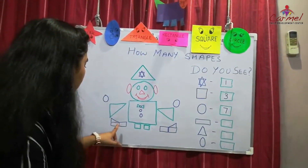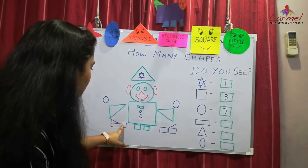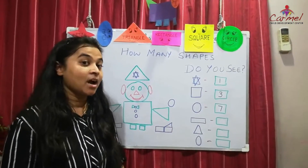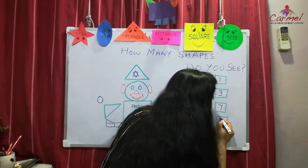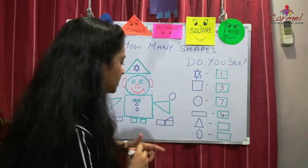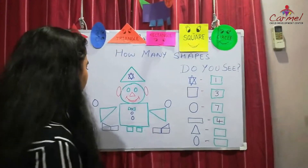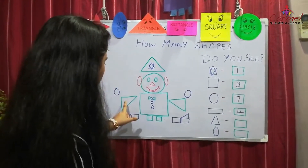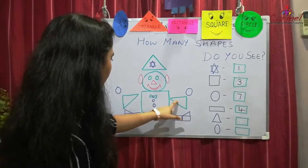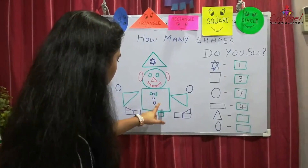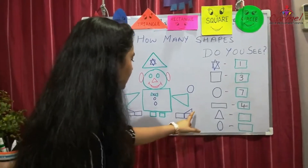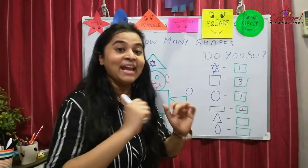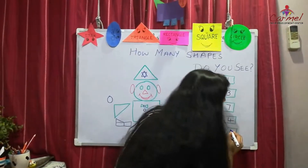Let's see how many rectangles there are: one, two, three, four. There are 4 rectangles. Now the triangle shape — how many triangles are there? Let's count: one, two, three, four, five, six, seven, eight. There are 8 triangles.